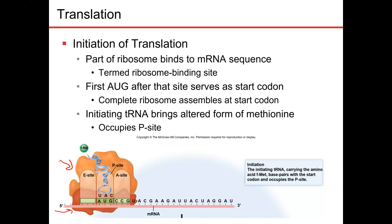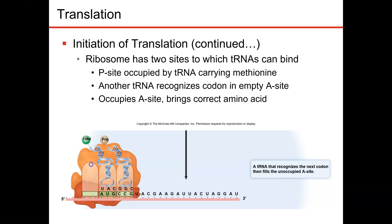In general, the first amino acid is always going to be methionine, or an altered form of methionine. That's always going to start translation, so methionine is the start codon.